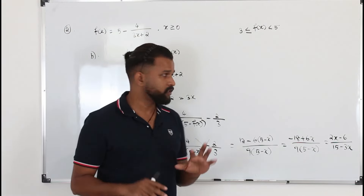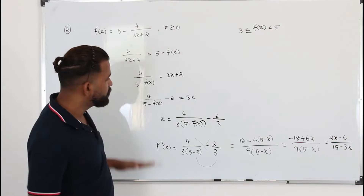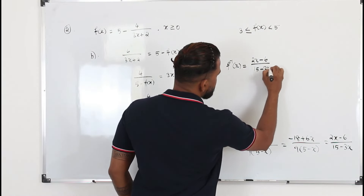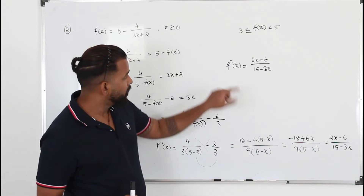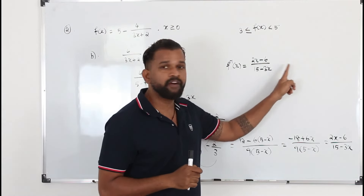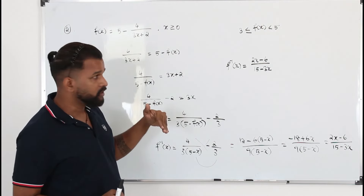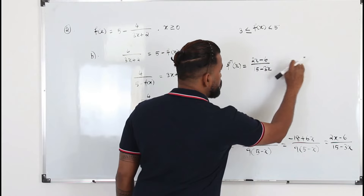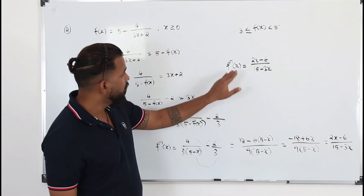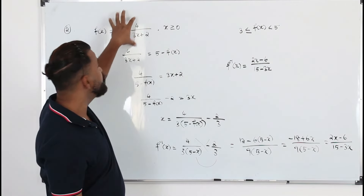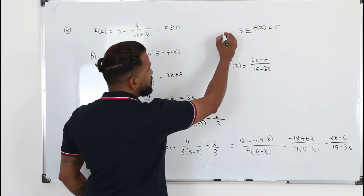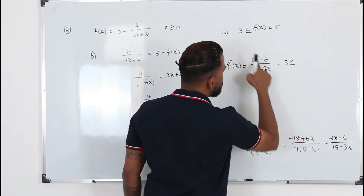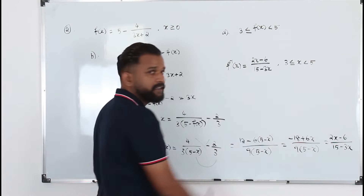In O-level maths, finding f inverse is enough. But at A-level, when they ask for the inverse function you must also state its domain — even if it's not a separate question, omitting it will cost marks. The domain of f inverse is the same as the range of f, which we found in Part A. So the domain is 3 ≤ x < 5.